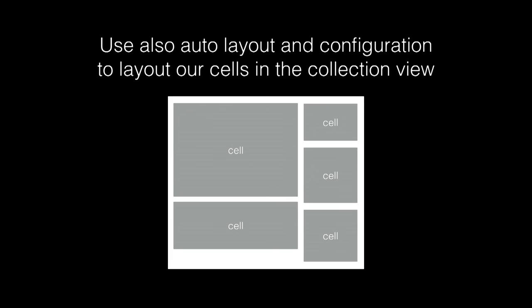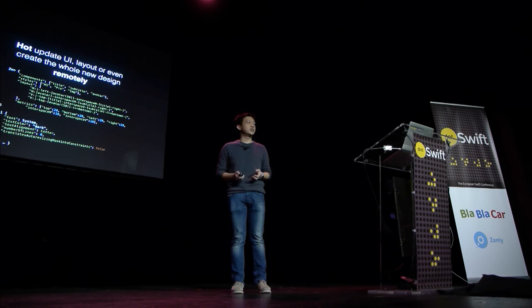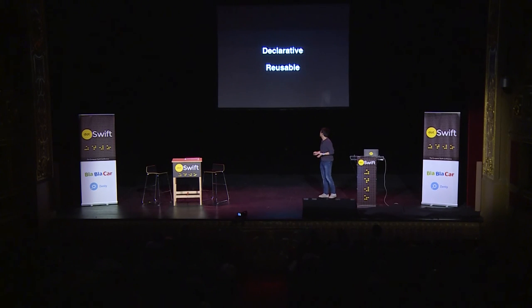Where to go from here? We can also lay out our cells using the same approach in the collection view. We can cut or update UI layouts, or even recreate a whole new design remotely, because this is basically a JSON structure. I'll show you the way to make our UI declarative, reusable, and totally configurable.